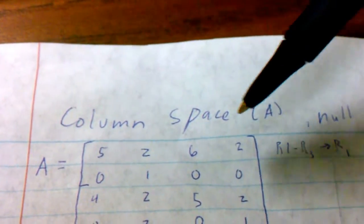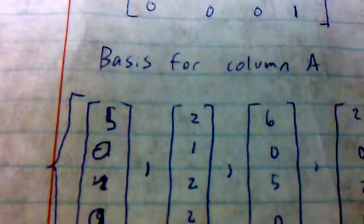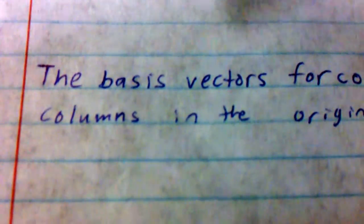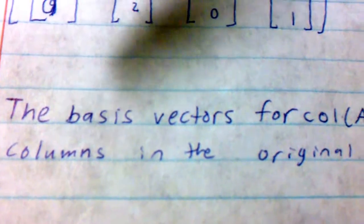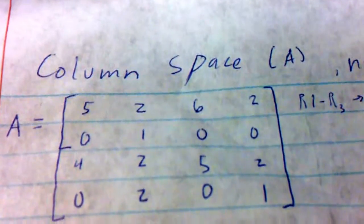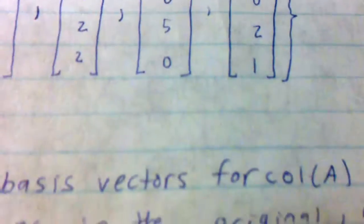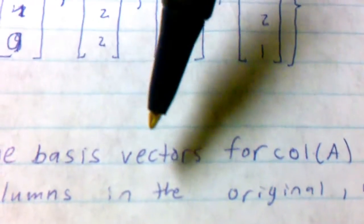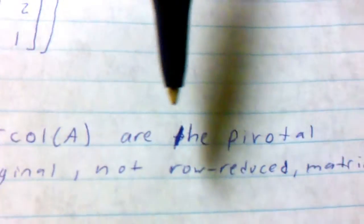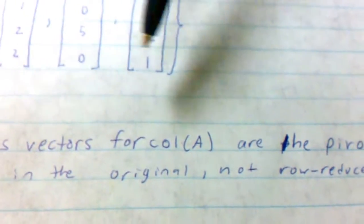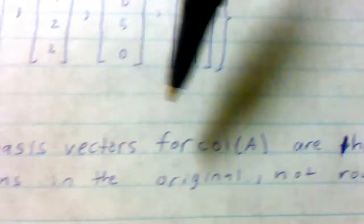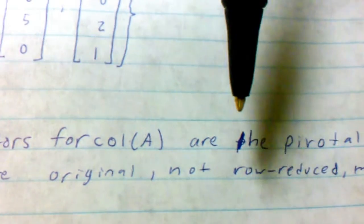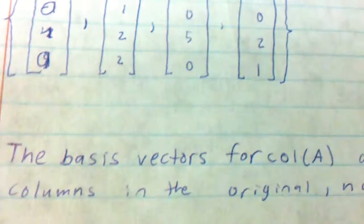So we're going to start with column space by finding basis for the column space. And the basis for column space is the basis vectors for column A, which is above right here, 4 by 4, are the pivotal columns in the original non-row-reduced matrix. So to do this, we row-reduce the matrix, and the columns which they'll row-reduce at the pivotal point, we will select those columns for the basis vectors.